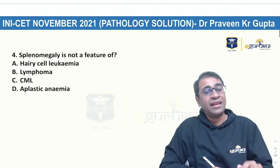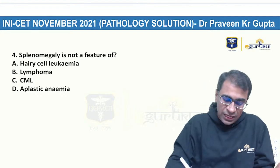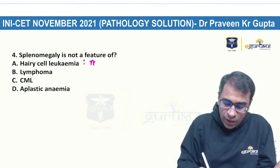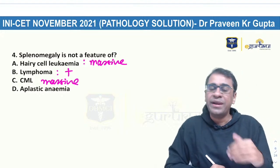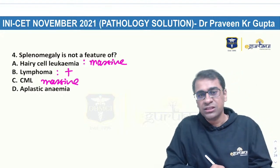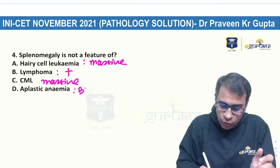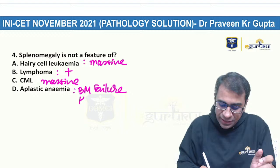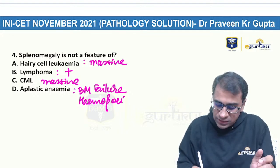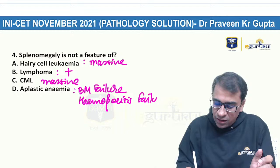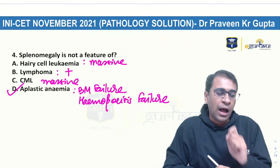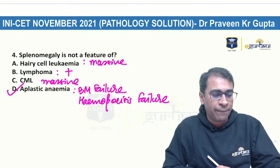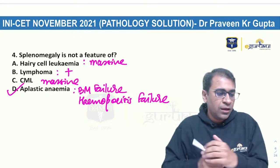Splenomegaly is not a feature of aplastic anemia. Splenomegaly is seen in hairy cell leukemia and CML can show massive splenomegaly. Lymphoma can also show splenomegaly. But aplastic anemia is a complete hematopoiesis failure occurring both in the bone marrow and in the spleen — therefore you will never find splenomegaly in aplastic anemia.